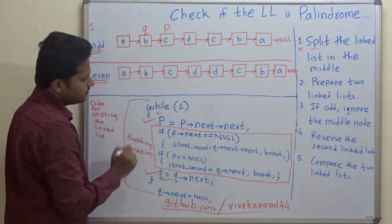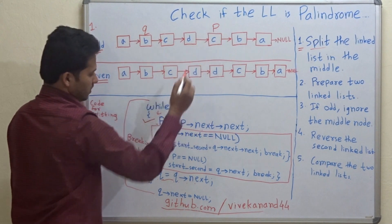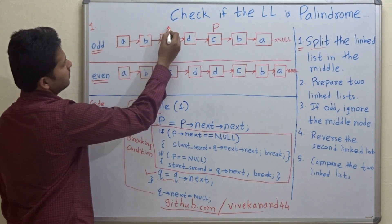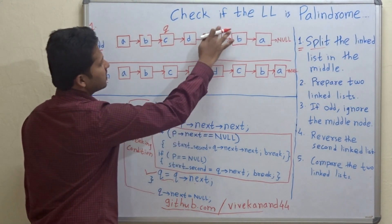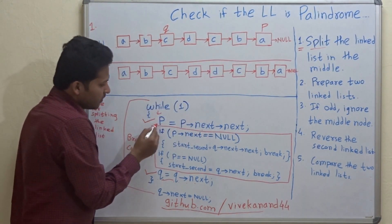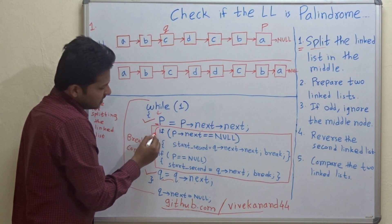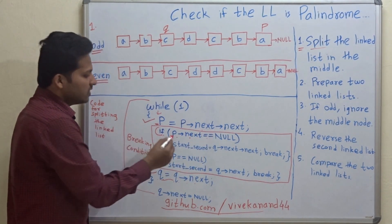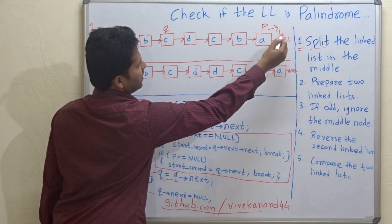For the next iteration, P will move forward by two positions and Q will move forward by one position. Again, in the next iteration, P will move forward by two positions. This is an important iteration: after P moves forward by two positions, the condition P->next == null becomes true. The next node of P is null.